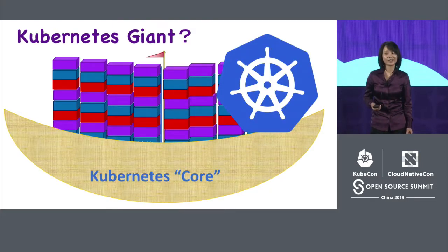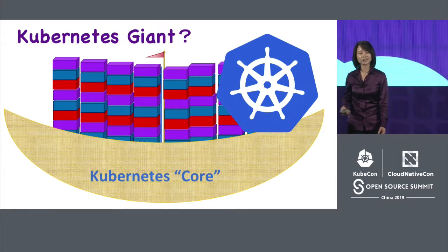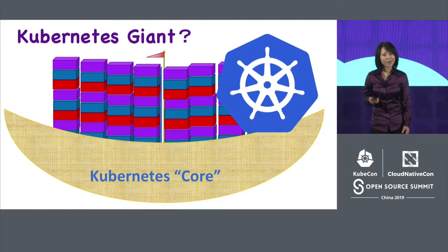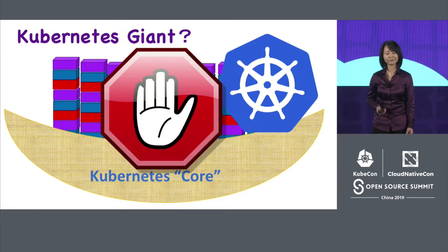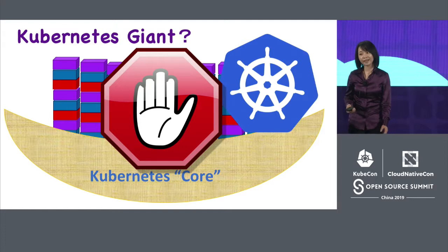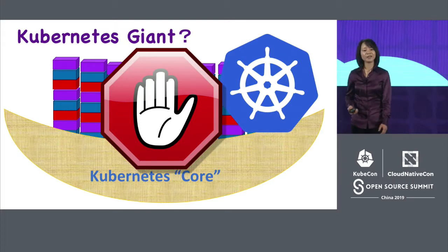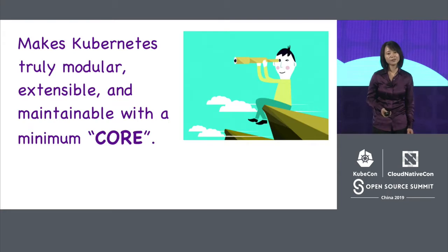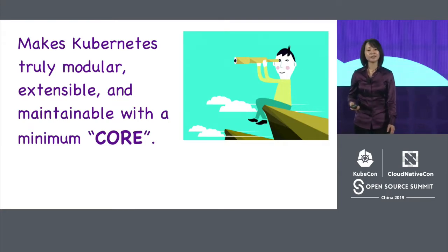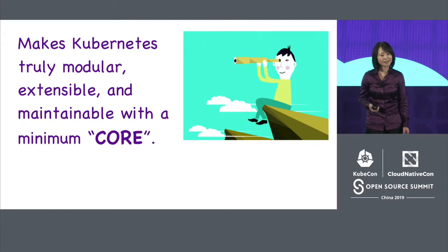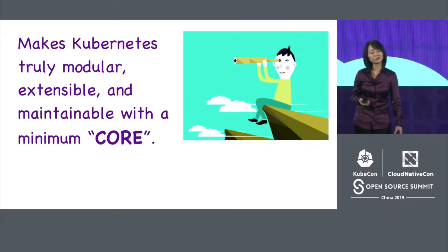Are we expecting Kubernetes to grow into this scary Kubernetes giant? How can we possibly manage and maintain such a giant? Obviously, we can't. It's time to put a stop and say no more — we can no longer keep adding APIs into Kubernetes core like this. Instead, what we need to do is make sure Kubernetes is truly modular, extensible, easy to add new features, and maintainable with a minimum core.